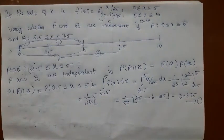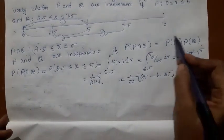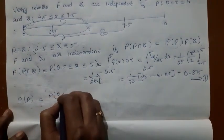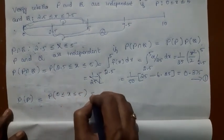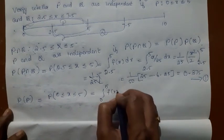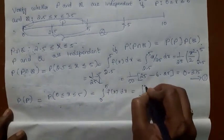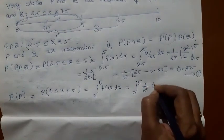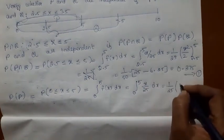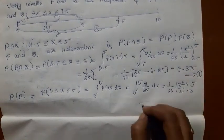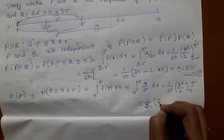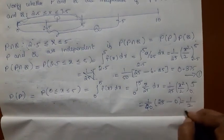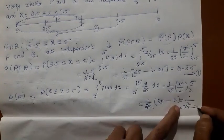The left-hand side is done. Now let us compute the right-hand side: probability of P and probability of Q. Probability of P is the probability that X lies between 0 and 5. Integrate F(x) = x/25 from 0 to 5. That gives (1/25)·(x²/2) evaluated from 0 to 5, which is (1/50)·25 = 25/50 = 0.5.